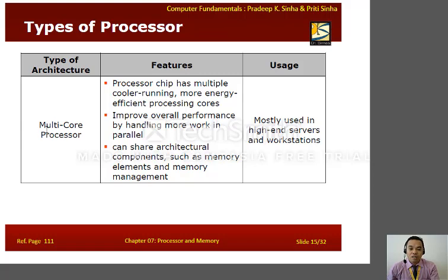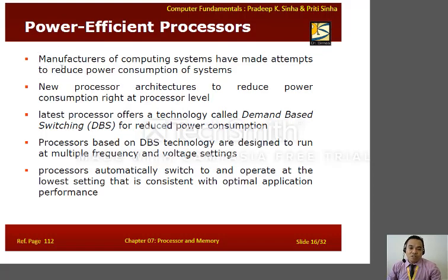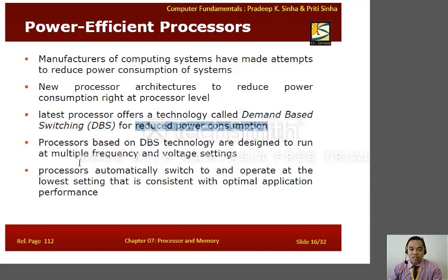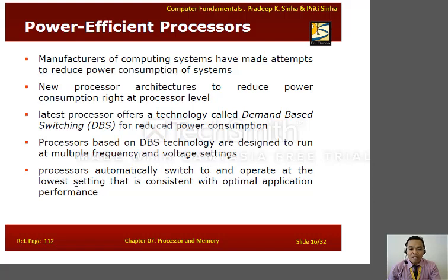The multi-core processor, or processor chip, has multiple processing cores running, making it more energy-efficient, and improves overall performance by handling more work in parallel. These are mostly used in high-end servers and workstations. Power-efficient processors: manufacturers have made attempts to reduce power consumption by applying demand-based switching, or DBS. Processors based on DBS technology are designed to run at multiple frequency and voltage settings, and they automatically switch to and operate at the lowest setting consistent with optimal application performance.